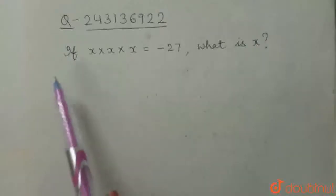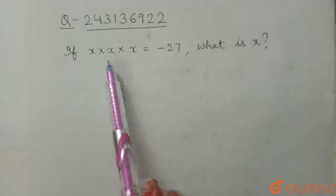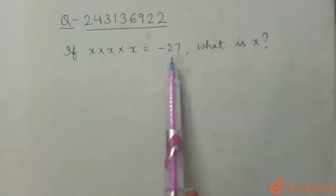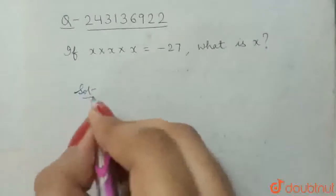Our question is, if x multiplied by x multiplied by x is equal to minus 27, what is x? So our solution will be,